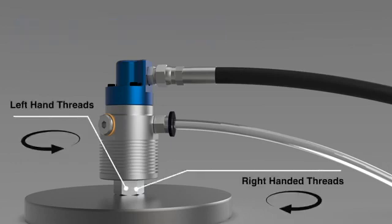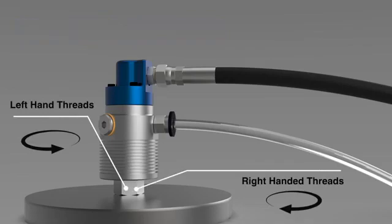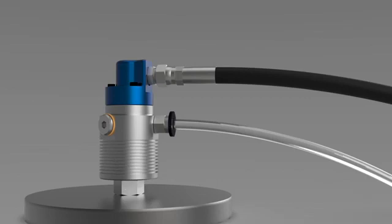Make sure the thread direction matches the machine. Some Dublin unions are available with either left-hand or right-hand threads. Tighten the rotor to the correct torque. Contact Dublin if you are unsure about the correct torque value.